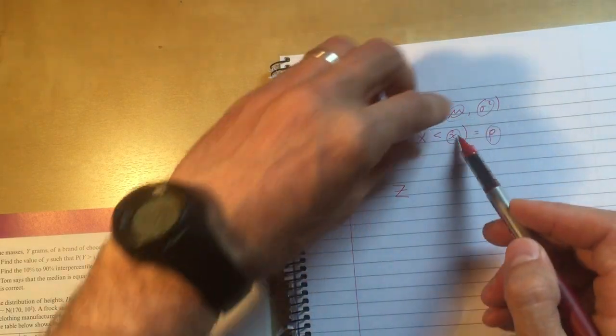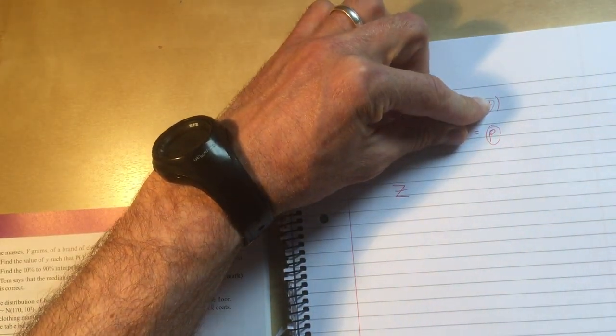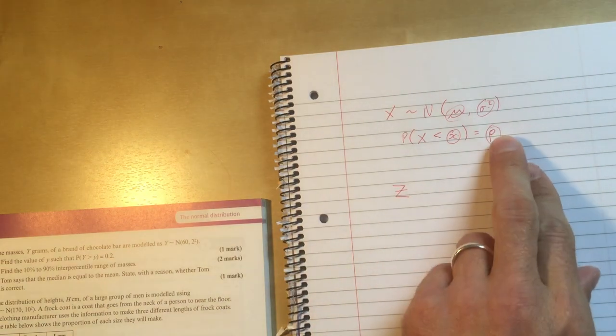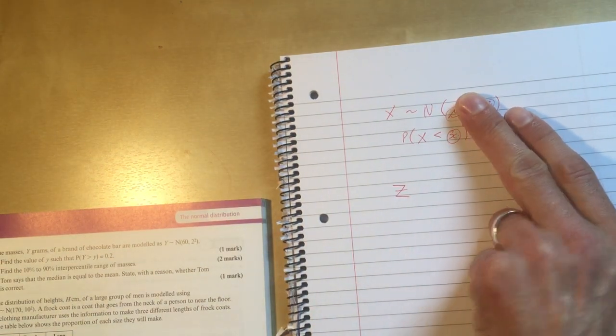So, if I give you mu and sigma and x, chuck it in your calculator, your calculator will tell you p. If I give you mu and sigma and p, chuck it in your calculator, your calculator will give you x.